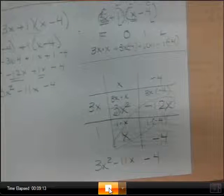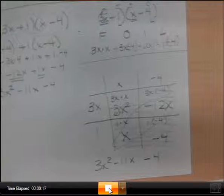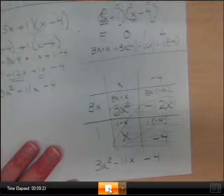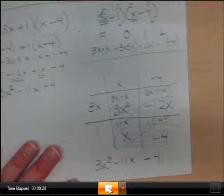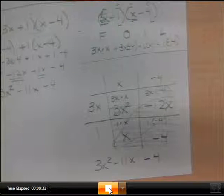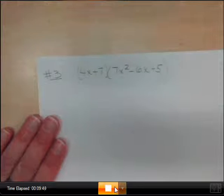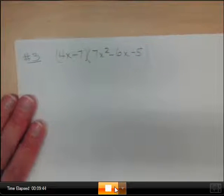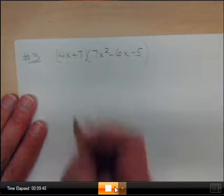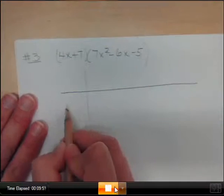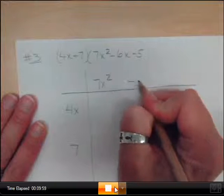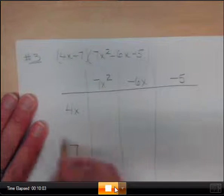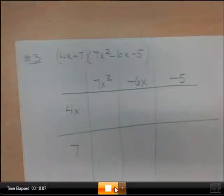So this is our last example. Here's our last example we're going to do in notes. And we're going to use that box method. So we have (4x + 7). And we have (7x² - 6x - 5). So when we make our boxes, I'm going to put my 4x and my 7. And then I have 7x², negative 6x, negative 5.